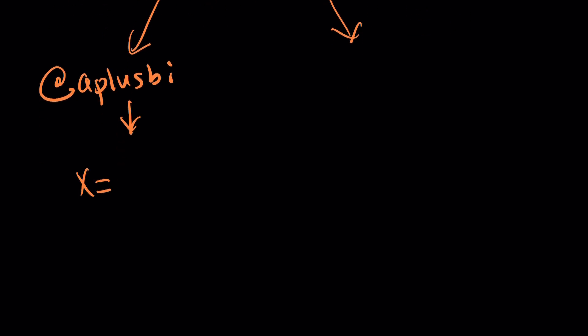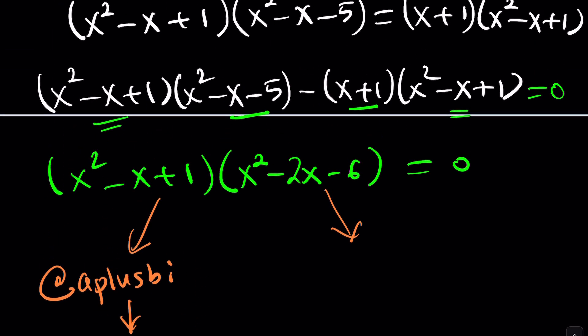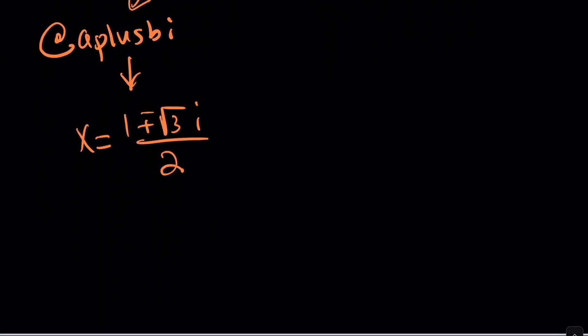x is going to be from here, negative b, plus minus the square root of b squared minus 4ac. That's going to be root 3i divided by 2. Did you recognize it? Of course, you should because those are the cube roots of negative 1. But, complex cube roots of negative 1. Great.